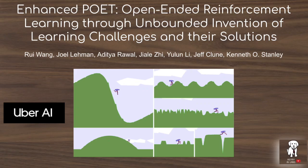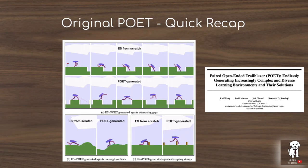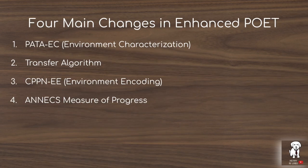This video will explain the Enhanced POET algorithm from researchers at Uber AI Labs. In a similar way that MuZero removes priors in AlphaGo and AlphaZero to make the algorithm more useful for broader reinforcement learning problems, Enhanced POET extends the original POET algorithm to be broadly applicable outside of the context of bipedal walking agents.